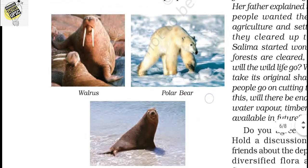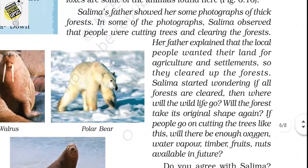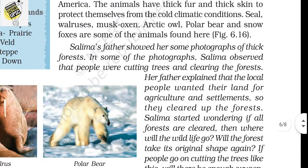Tundra type of vegetation is also called polar vegetation. These are the main concepts included in this chapter. It is a simple yet very useful chapter for UPSC exams, especially in the geography portion. I hope you enjoyed this class. If you liked it, like the video and share with your friends. Thank you.